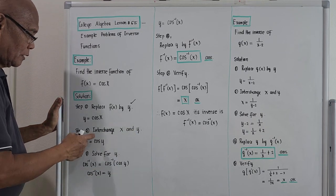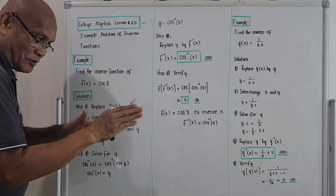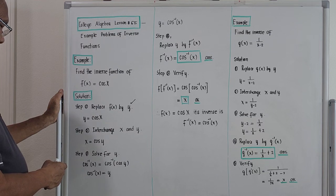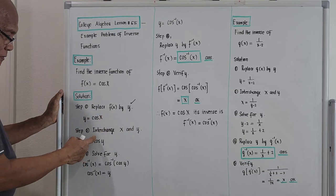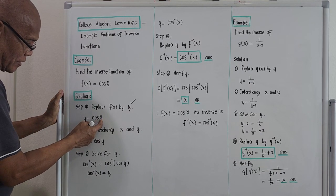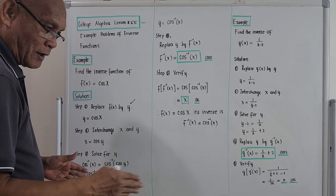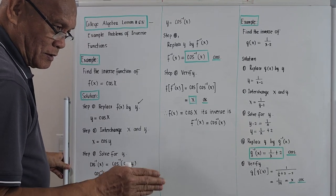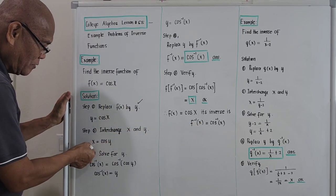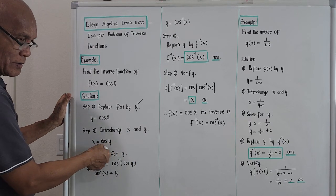Step number two: interchange x and y. Meaning for every x replace it by y, and for every y replace it by x. So this y will become x, and this x will now become y. Since it's not an algebraic equation but a trigonometric one, we simply interchange x and y. What comes out will be x equals cosine of y.